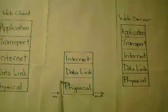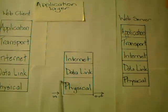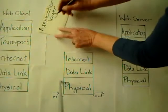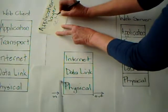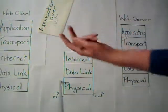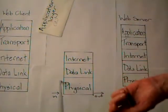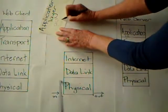The first part of this process is where the application layer of the web client sends a web request. There will be a GET, and basically it will say GET index page or index.html, and it will have a host.